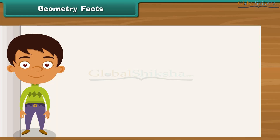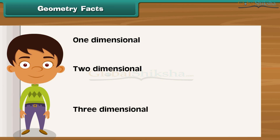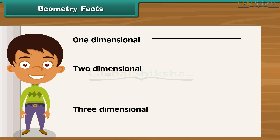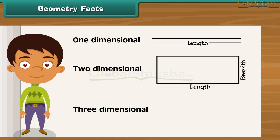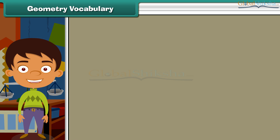Geometry facts are generally described in three parts: one-dimensional, two-dimensional, and three-dimensional. One-dimensional geometry deals with lines, which have only length. Two-dimensional geometry involves length and breadth. Three-dimensional geometry involves length, breadth, and height.